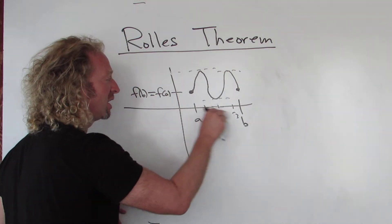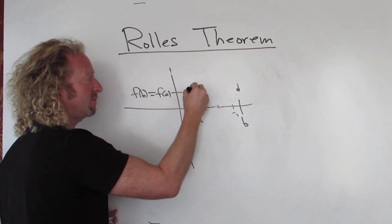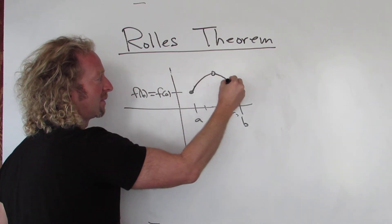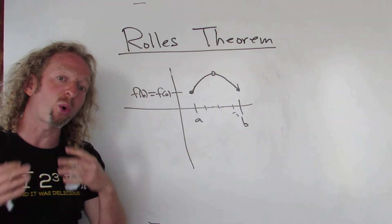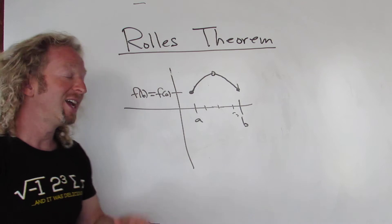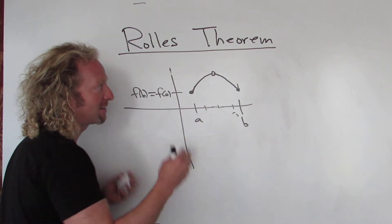What if we try to cheat? Well, we could do something like this. But then that would mean the function is not continuous. So Rolle's Theorem requires the function to be continuous. If it didn't, we can break the theorem by doing something like this, right? But we can't because it's continuous.